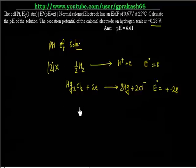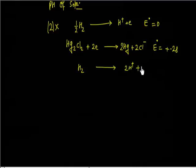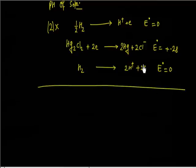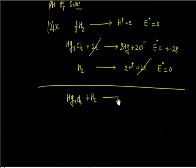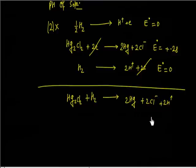So this becomes: H₂ → 2H⁺ + 2 electrons, and E° does not get multiplied, so this is 0. Now if I add these two reactions, the 2 electrons cancel. So we have: Hg₂Cl₂ (solid) + H₂ (gas) → 2Hg (liquid) + 2Cl⁻ + 2H⁺.